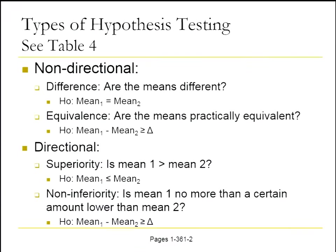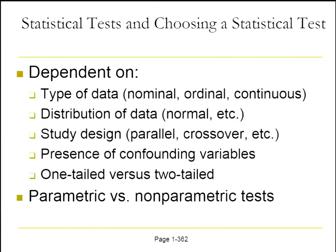Table four in your handout describes different types of hypothesis tests — non-directional and directional. We'll come back to this in the second half to discuss these factors a little bit more. How we choose a statistical test depends on a variety of factors: what do the data look like — is it nominal, ordinal, or continuous? What's the distribution — is it normally distributed or not?